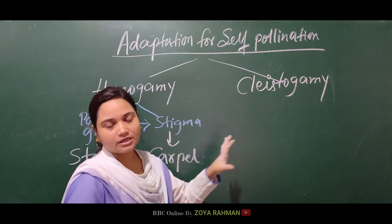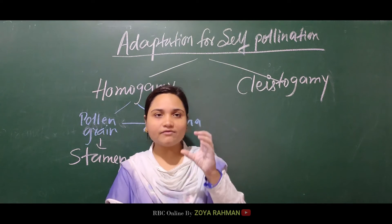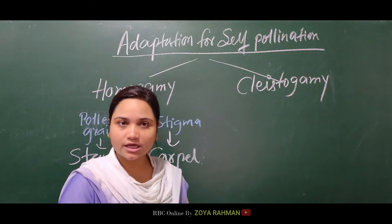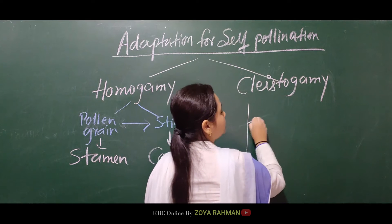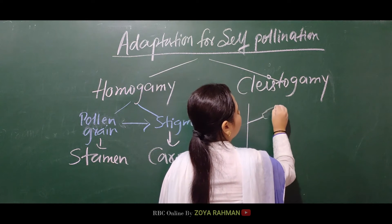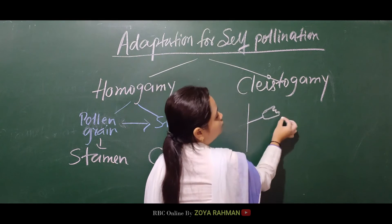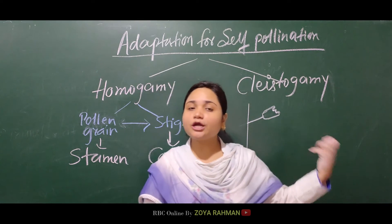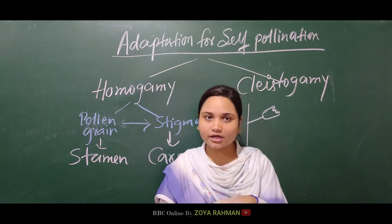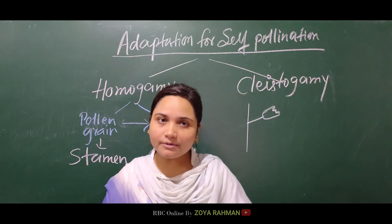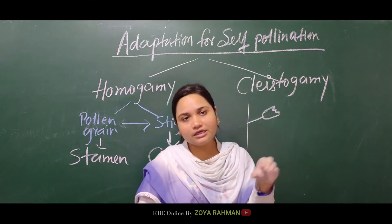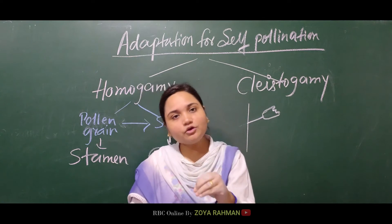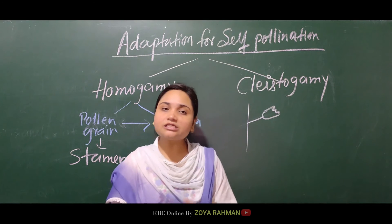Cleistogamy means closed flower. The flower must be closed, because if the flower is closed, self-pollination will be easy. If it is open, pollen grains will be shed and fall out. There will be no control and pollen grains will be wasted. For self-pollination, we don't want any other pollen grain to reach the female part, so it is necessary that this flower stays closed. A cleistogamous flower will remain closed, ensuring self-pollination.